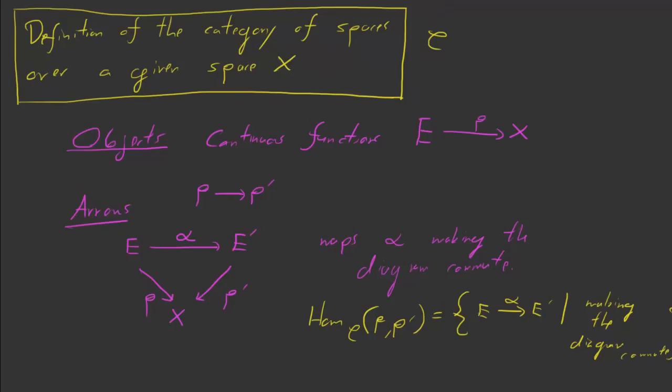So this is sometimes called the slice category over x. Maybe a concise way of saying this is that it's the category of topological spaces over x, the slice category. This is the same thing. This is what we've been describing. This is the category of spaces over x.